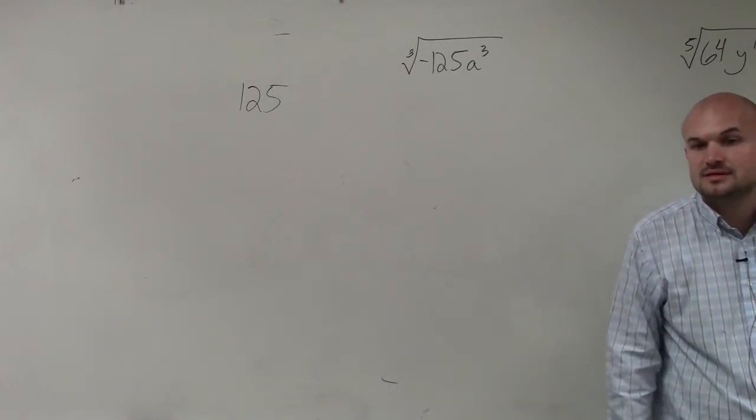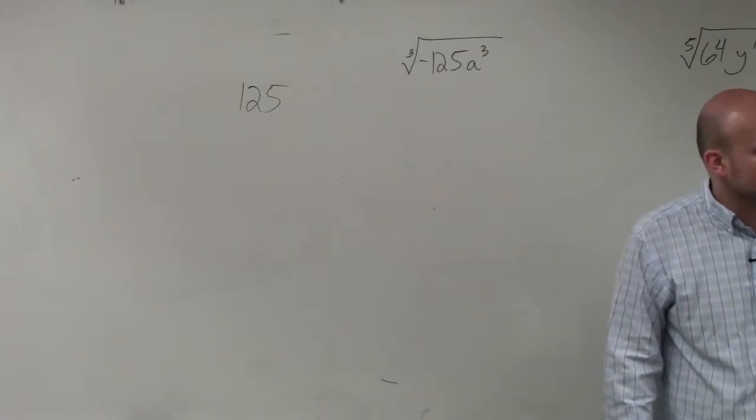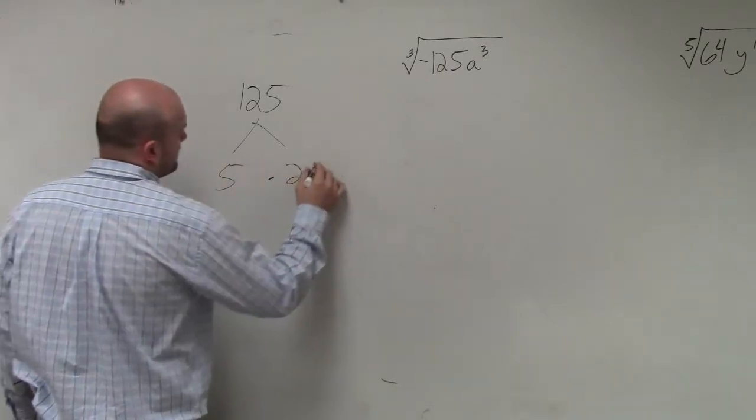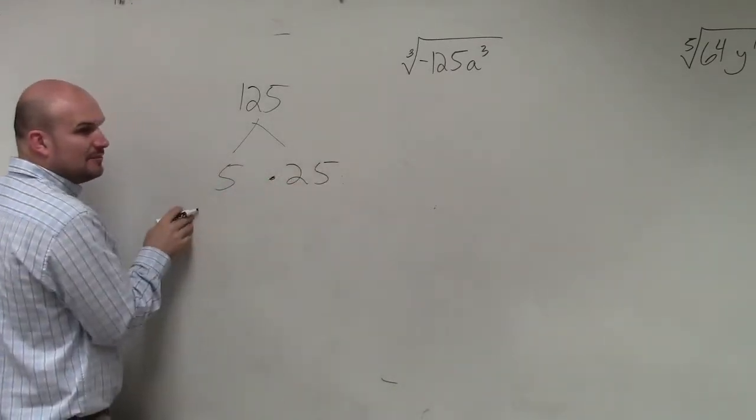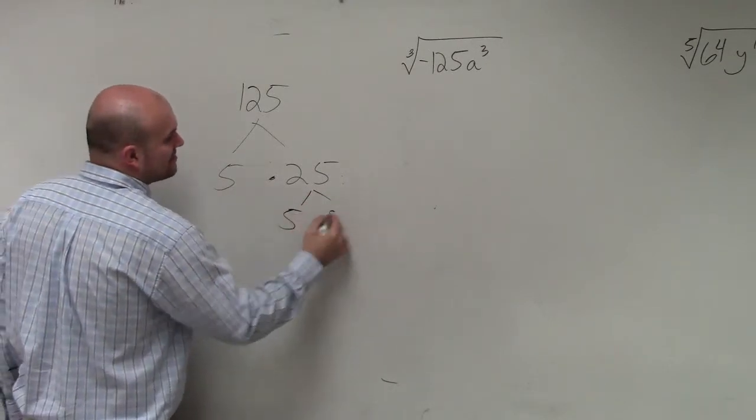25 times? Well, it goes in there. 25 goes into 125 five times. Then, can I break down 5 anymore except for 5 times 1? But I can break down 25, which is 5 times 5.